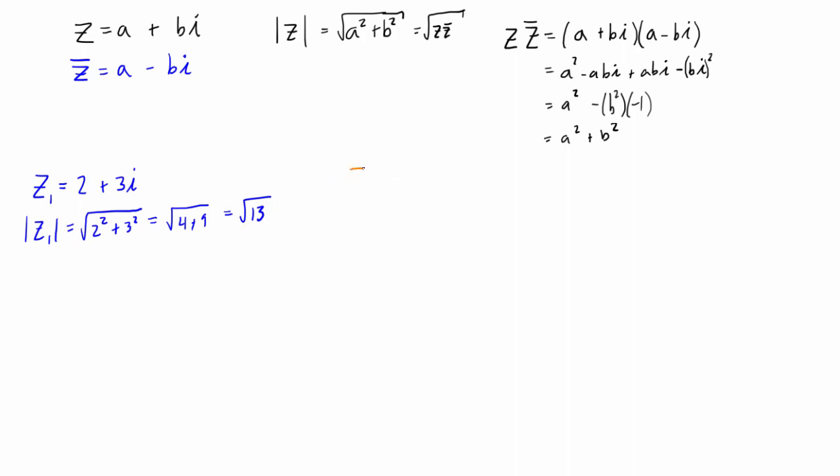If we look at another example, maybe we have z2 equal to negative 4 minus 2i. Then the modulus of z2 would just be equal to the square root of negative 4 squared plus negative 2 squared. So we have the square root of 16 plus 4, which is the square root of 20. And you can even simplify this a little bit more. We have square root of 4 times square root of 5, so we can reduce that to 2 square root 5, which is another positive real number for the modulus.